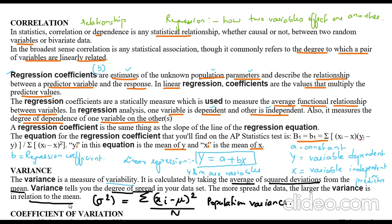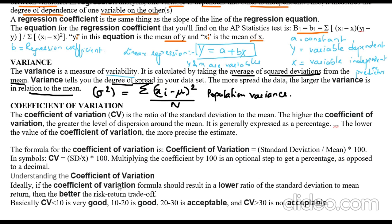In summary: correlation describes the relationship between two variables; regression is the mathematical expression of how much they are related; the regression coefficient estimates unknown population parameters and describes the relationship between a predictor variable and the response; and variance tells us about the degree of spread — the more the spread, the greater the variance relative to the mean.